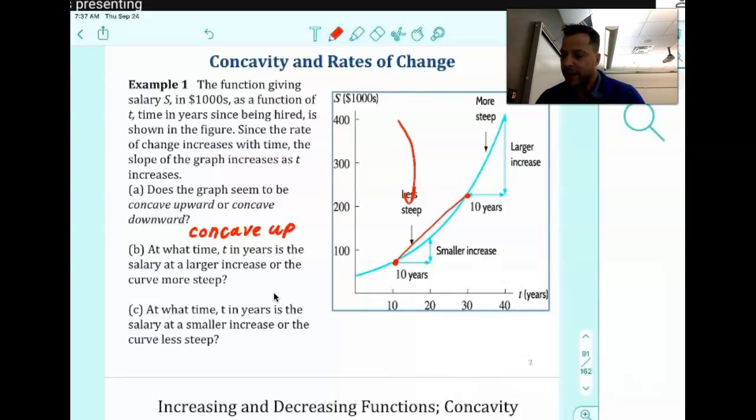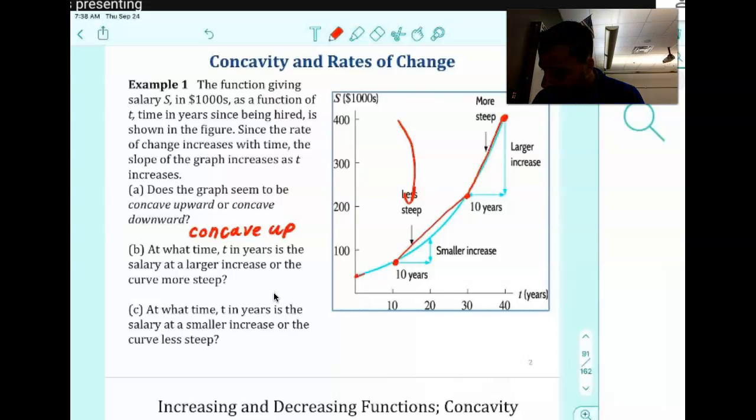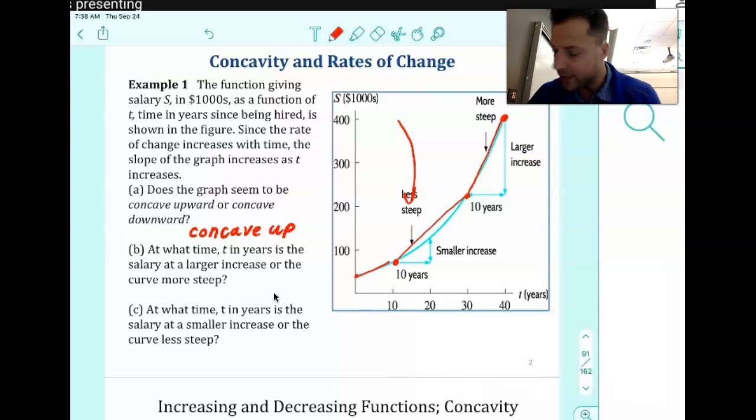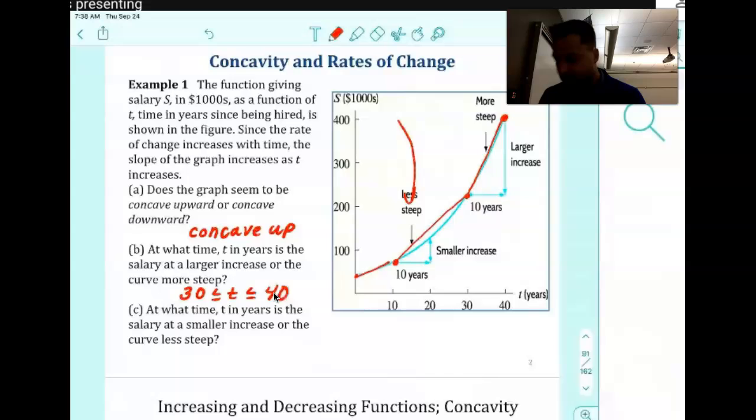At what time T in years is the salary at a larger increase, or the curve is more steep? So that's a steeper slope. We have this little slope here, and if I take a couple more points here, you can see that that slope is steeper than this one. That's the steepest slope that we have, and that's going to occur between 30 and 40 years. So the increase in salary is the greatest over those years.